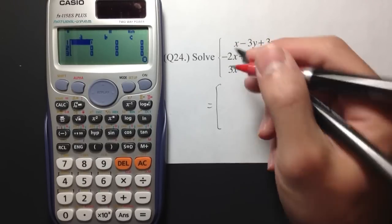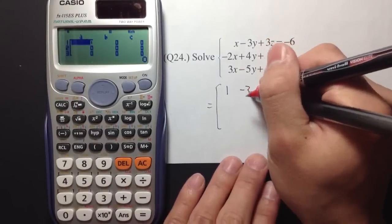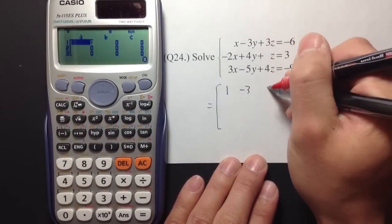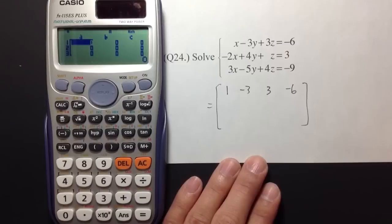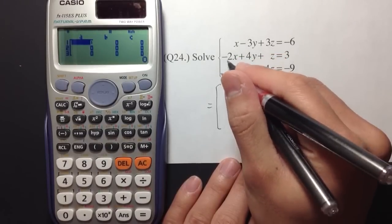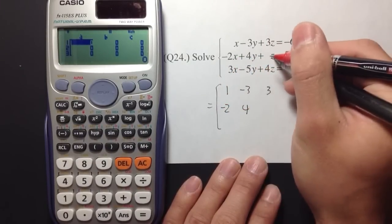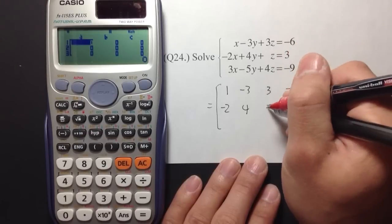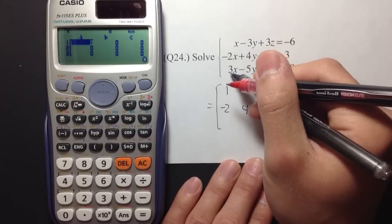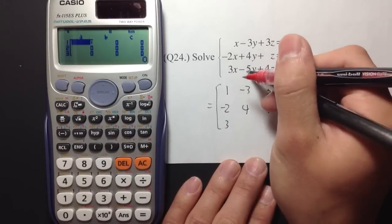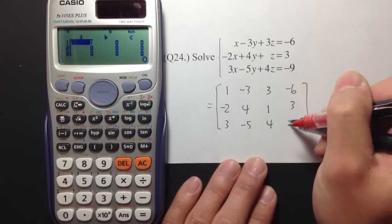So, the first number I have for x is 1. And next, I have negative 3. And next, I have 3. And then, I have negative 6. And then, for the second row, I have negative 2. I have 4. I have a z, which is 1z. So, I have a 1. And then, I have a 3. And then, I have 3, negative 5, 4, and negative 9.